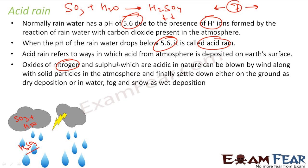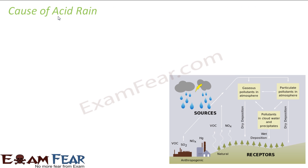As mentioned, oxides of nitrogen and sulfur, which are acidic in nature, can be blown by winds along with solid particles, and finally settle down on the ground as dry deposition or in water as wet deposition. These are the major causes of acid rain — oxides of nitrogen and oxides of sulfur.